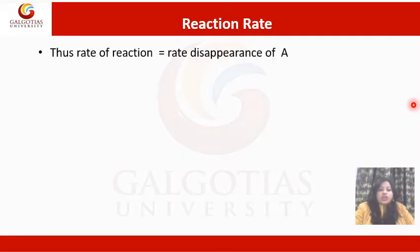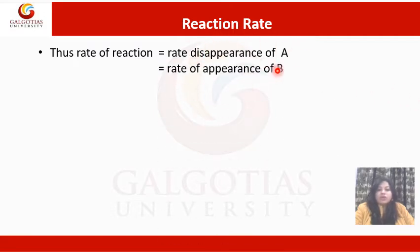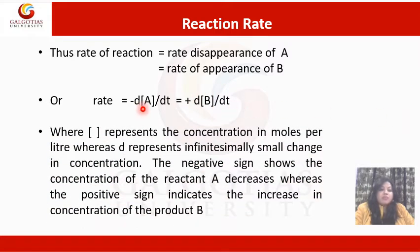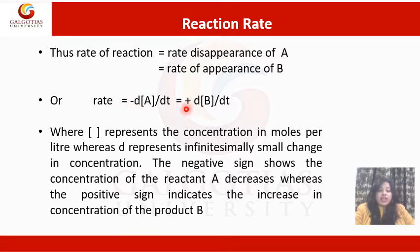Thus, the rate of reaction equals the rate of disappearance of A, which equals the rate of appearance of B. Rate = -d[A]/dt = +d[B]/dt, where the square brackets represent concentration in moles per litre and d represents an infinitely small change in concentration. The negative sign shows the concentration of reactant A decreases, whereas the positive sign indicates the increase in concentration of product B.